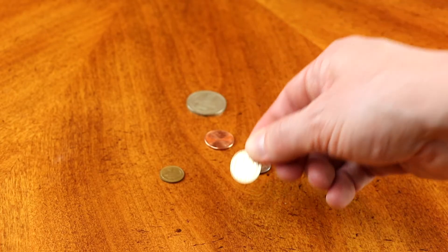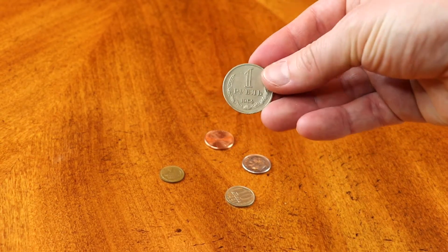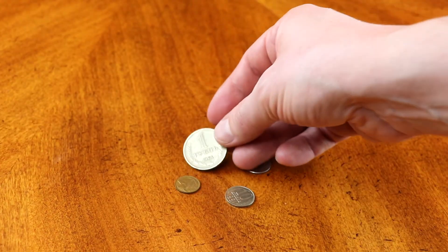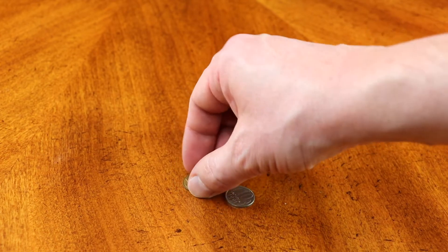So ten of these will make one ruble. This is one ruble. And by the way, you need hundreds of these small ones to make one ruble.